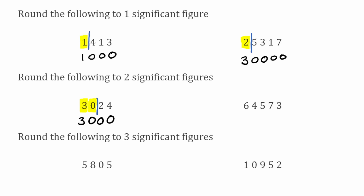Moving on, we have 64,573. 6 is our first significant figure and 4 is our second significant figure. We draw our line between the 4 and the 5. Looking to the right we've got a 5, so because it's 5 or greater we round up the previous digit — the 4 turns into a 5. On the left-hand side we now have 6 and then 5. Filling in the placeholders with zeros, 64,573 rounds up to 65,000.